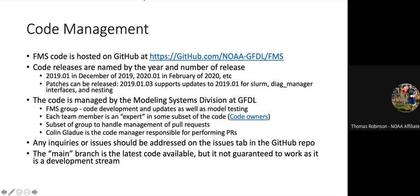The code is managed by the Modeling Systems Division at GFDL, with everyone an expert in some subset of the code. There's a code owners file to see who would be reviewing pull requests. One main manager named Colin handles all merges and releases. Issues and inquiries are handled on the GitHub page. GitHub has announced converting master branch to main, and we will also be converting our main development branch to main — we're shooting for September.